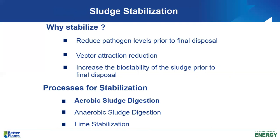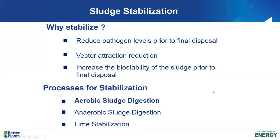We have some options for stabilization: aerobic sludge digestion, anaerobic sludge digestion, or lime stabilization by raising the pH up to around 12 for a certain amount of time, which destroys pathogens. We're going to focus on aerobic digestion of sludge.